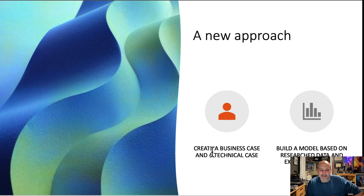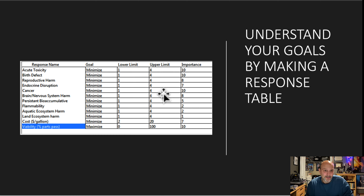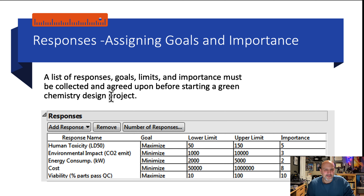We need to create a business case and a technical case. We do that by building a model based on research data combined with experimental data. We build this mathematical relationship between the factors and the responses. We start with a table of all the things we might want to monitor as responses, give a 10 to the most important and a 1 to the least. You can't make everything 10 or the system won't work.